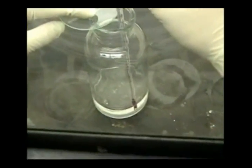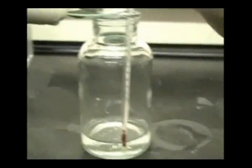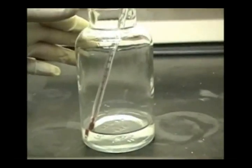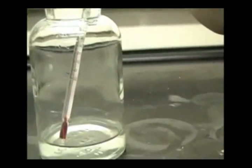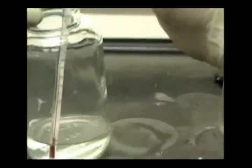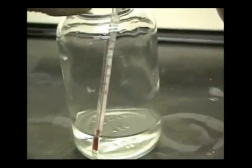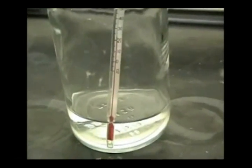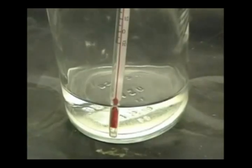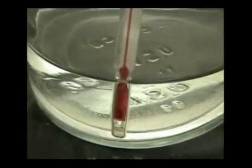We are now taking the temperature of the acid rain. We are taking our time measuring the temperature in order to get an accurate reading. The temperature of the acid rain is roughly 23 degrees Celsius.